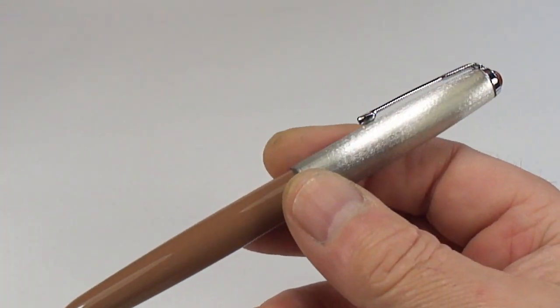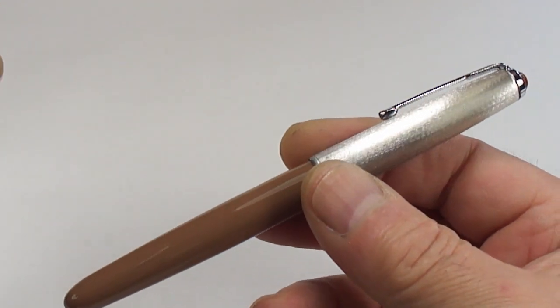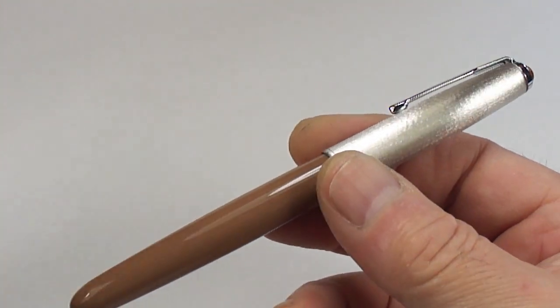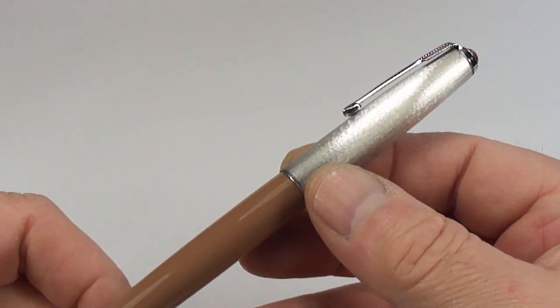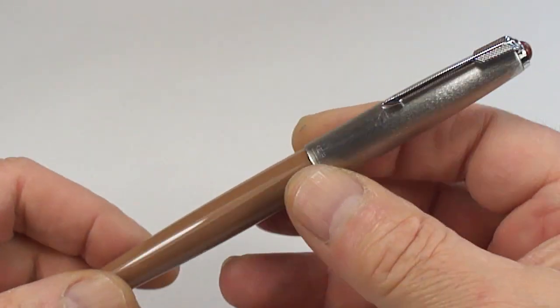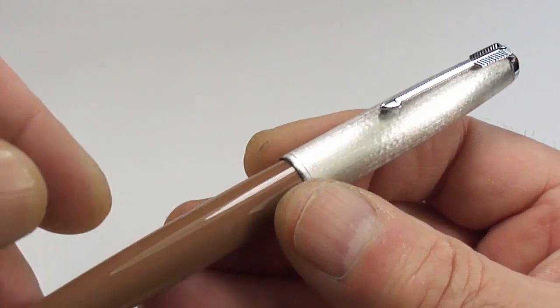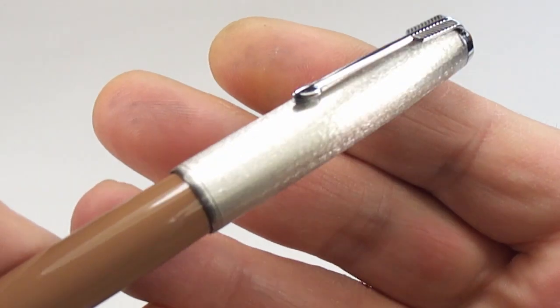The size of it from the top of the cap to the bottom of the barrel around about 137 millimeters, capped around the barrel it's a tad below 12 millimeters in diameter. Now again let's go back to the cap